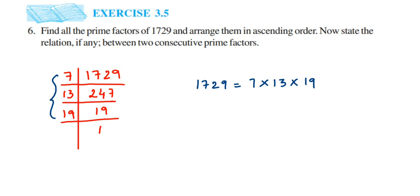So the first part of the question is over. The second part is asking us to state the relationship if there's any relationship. We have to state it and they're asking us to find out a relationship between two consecutive prime factors. So we have 7, 13, and 19.